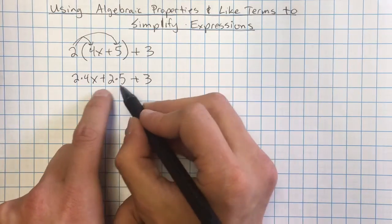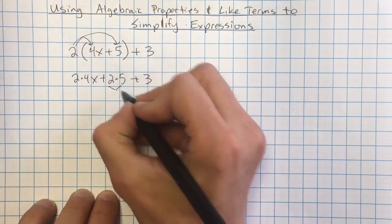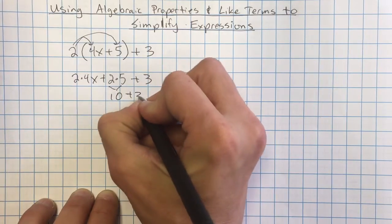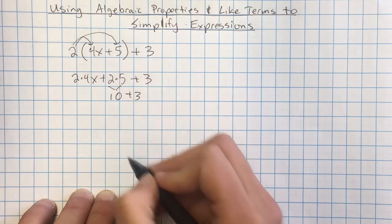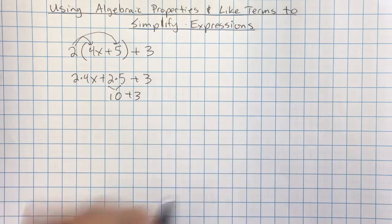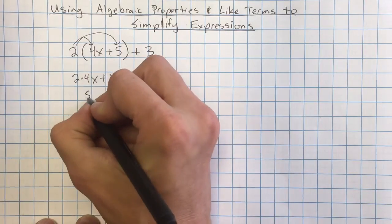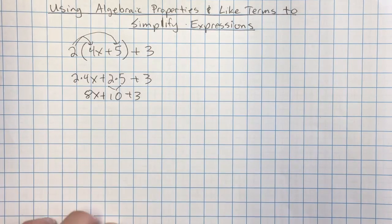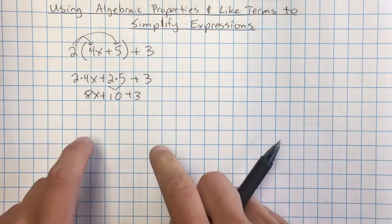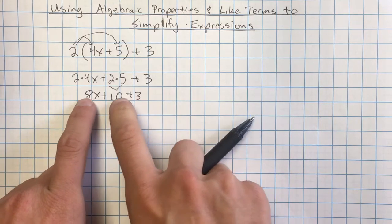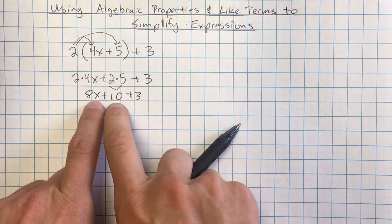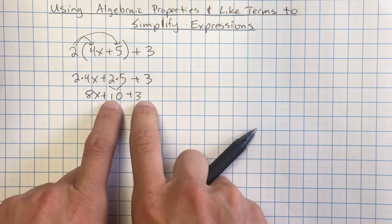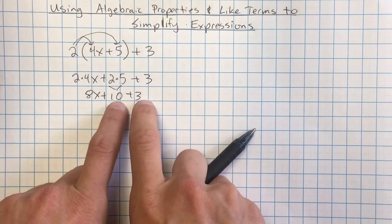I'm going to follow order of operations. I can't add these first, I have to multiply. So this 2 times 5 is going to give me 10. And this is 2 times 4 times x, which is the same thing as 8x. So I now have 8x plus 10 plus 3. And I want to keep simplifying. I'm going to remember that I cannot add the 8x and the 10 because those are two different things. But I can add the 10 and the 3. I can add any whole numbers together.